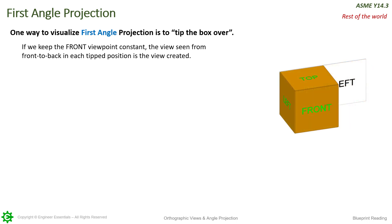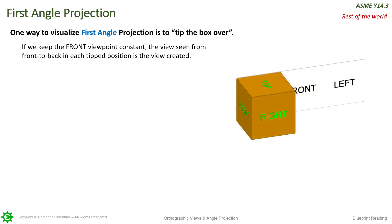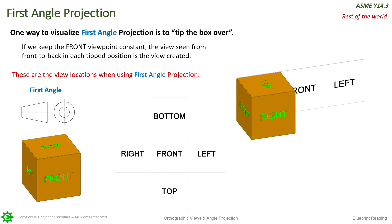Same thing with the right view. If we tip it over again, that's where the right view will be. Remember our rule with first angle projection: the object is between the observer and the drawing itself. So here we're viewing the right view. The box can continue to be tipped over to form the views. If you look, it's basically the opposite of the third angle view method. You can see why people get so confused if they're not aware whether they're using first angle or third angle projection — they could be looking at the wrong side of the part.